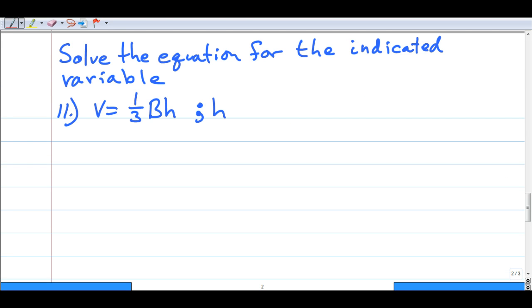In question number 11, the instructions read, solve the equation for the indicated variable. Our formula is V equals 1 third B times H. The indicated variable is the H. We're going to solve for H.